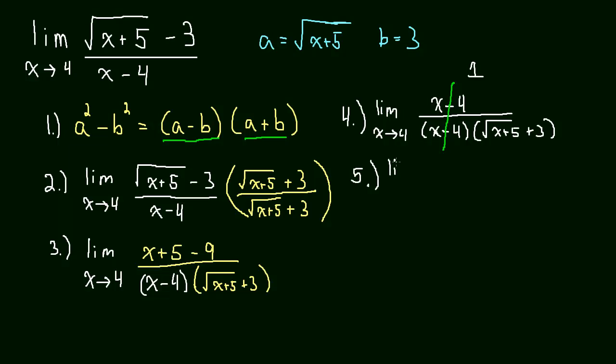A lot of people like to say cancel. I say divide to 1, because I think when that situation arises, it helps you remember what to do. So we're left with the limit as x approaches 4 of 1 over the square root of x plus 5 plus 3. And now we're finally ready to substitute.